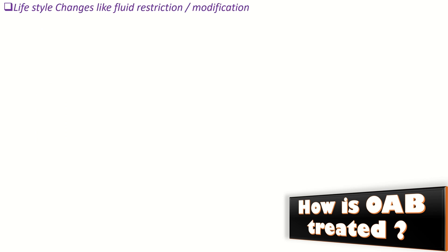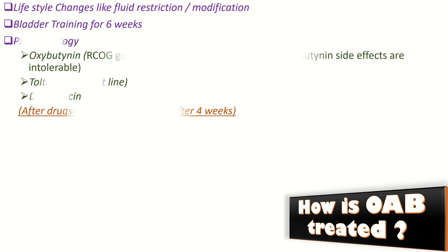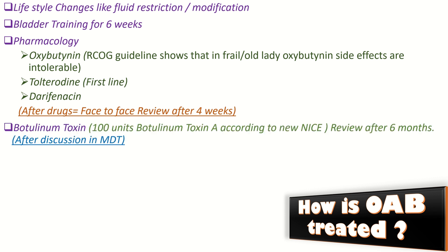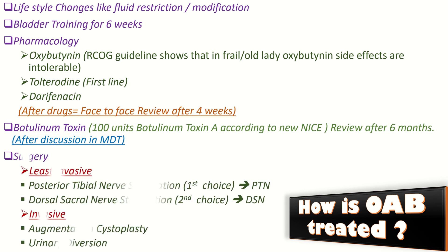Overactive bladder is treated by lifestyle changes such as fluid restriction or modification, bladder training for six weeks, and pharmacology using drugs like oxybutynin. The first-line drug is tolterodine and the second is darifenacin. After starting medication there should be a face-to-face review after four weeks. Botulinum toxin is also very effective and should be prescribed after appropriate discussion in an MDT. One hundred international units of botulinum toxin A is prescribed according to NICE guidelines, with review after six months. Surgical options include less invasive choices like posterior tibial nerve stimulation and sacral nerve stimulation, while more invasive options include augmentation cystoplasty and urinary diversion.